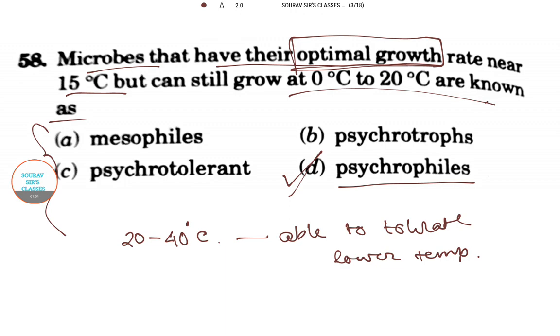Psychrophiles are defined as organisms that can grow only in low temperatures up to a maximum of 20°C. Many such organisms are bacteria, but psychrophiles also include eukaryotes, which is interesting.